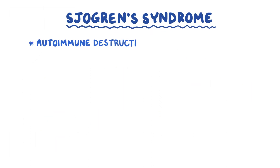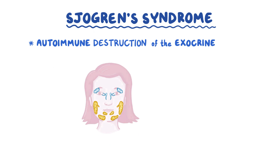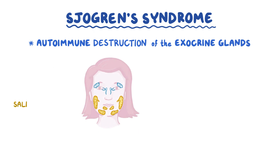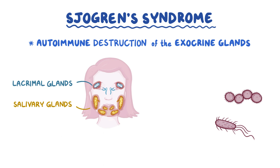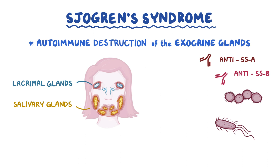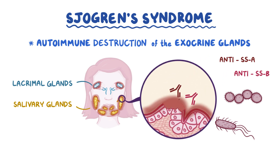As a quick recap, Sjogren's syndrome is caused by autoimmune destruction of the exocrine glands, most commonly the salivary and lacrimal glands, often following an infection. Anti-nuclear antibodies, typically anti-SSA and anti-SSB antibodies, cause destruction of the secretory cells in the exocrine glands, resulting in dry eyes and mouth.